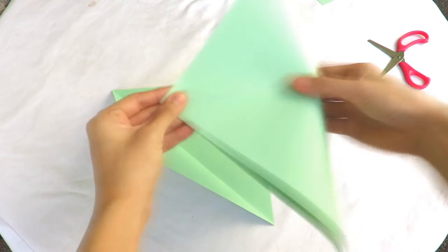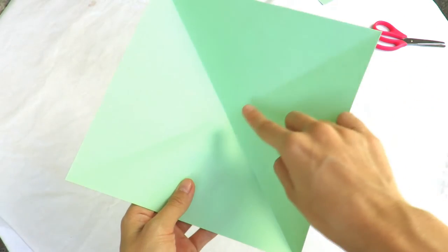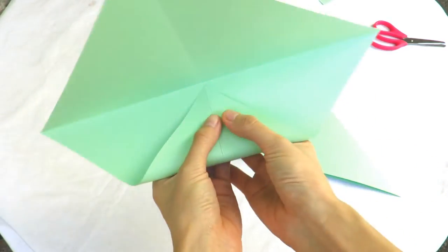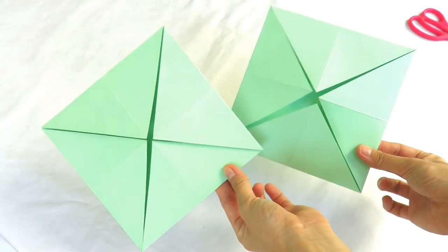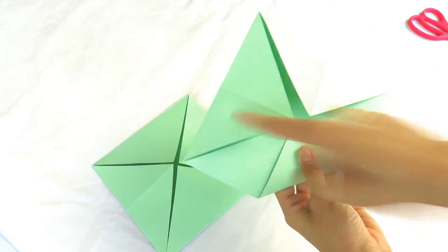After that, fold the paper on its opposite diagonal in order to form a cross in the middle of your square. Then, take one corner of the square and join it to the intersection in the middle of your paper. Do this with the rest of the corners until you get a smaller square. Repeat the same steps until you get an even smaller square.